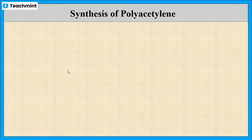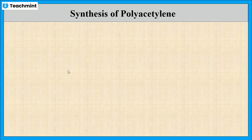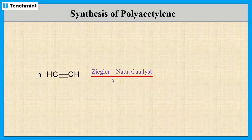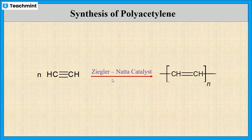Now let us see the synthesis of polyacetylene. One of the most common methods for the synthesis of polyacetylene is the use of Ziegler-Natta catalyst. When acetylene is reacted with the Ziegler-Natta catalyst — such as triethylaluminium with titanium isopropoxide — it will form polyacetylene.